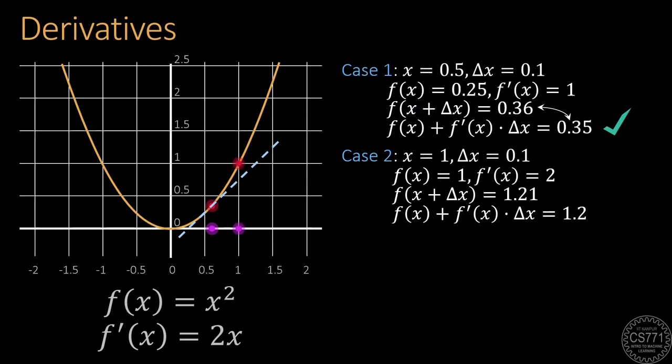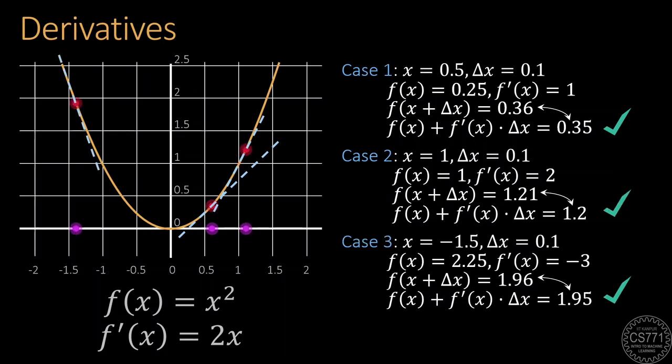No matter what point we start, whether we move left or right, whether the function value is increasing or decreasing at our starting point, this technique always seems to work. Notice that even though we moved 0.1 to the right every time, the function value increased in the first two cases and decreased in the third case. The amount of the increase was also not the same in the first two cases.